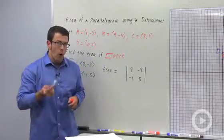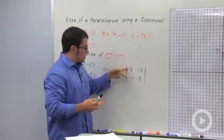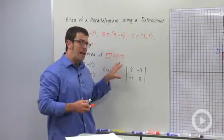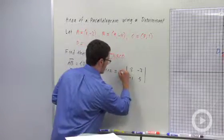Now I have to do one other thing. Remember when you switch rows of a determinant, you change the sign of the determinant. So it's possible to get a negative answer from this determinant, so you should always take the absolute value.